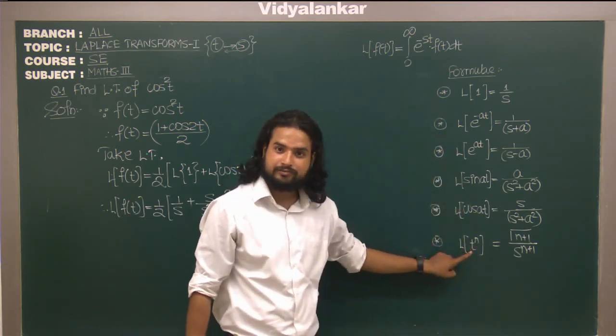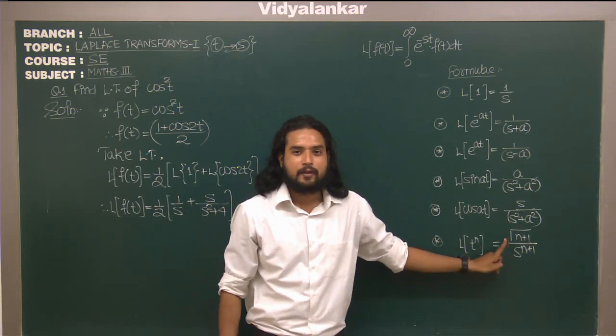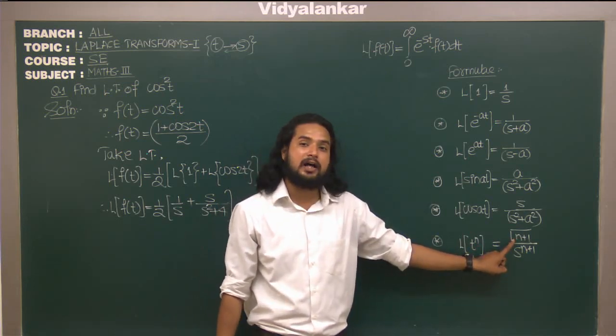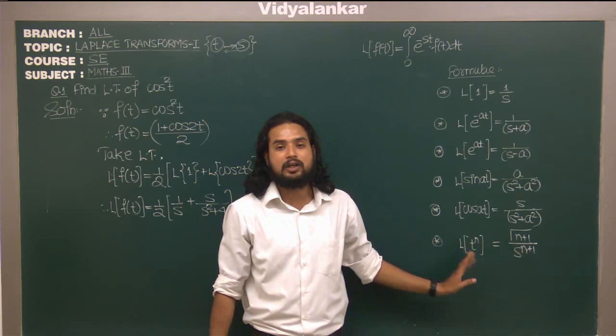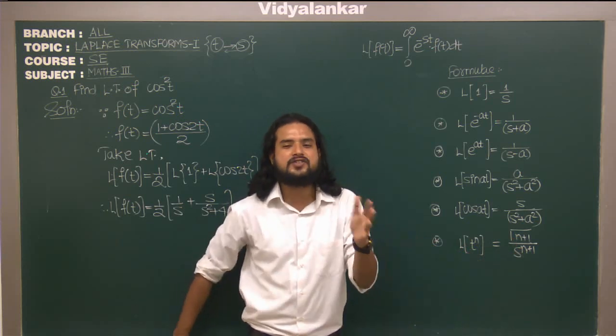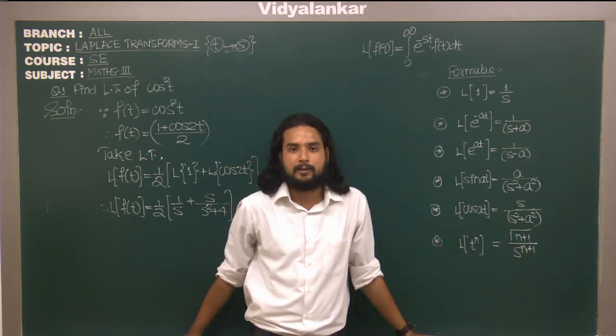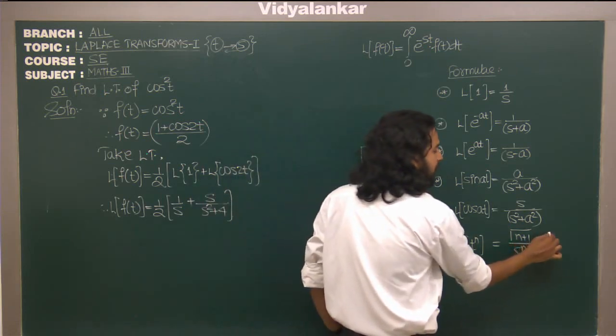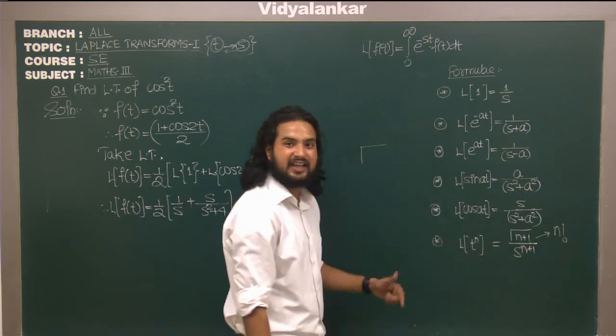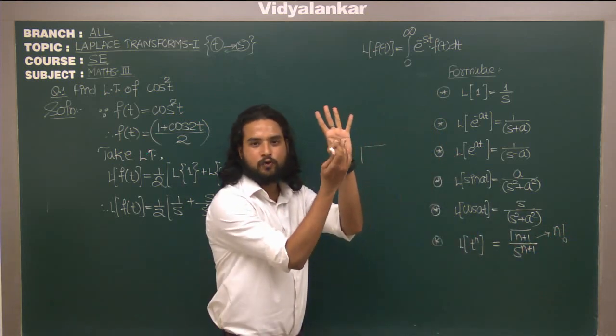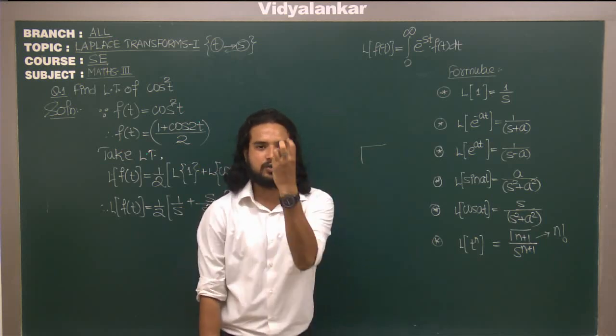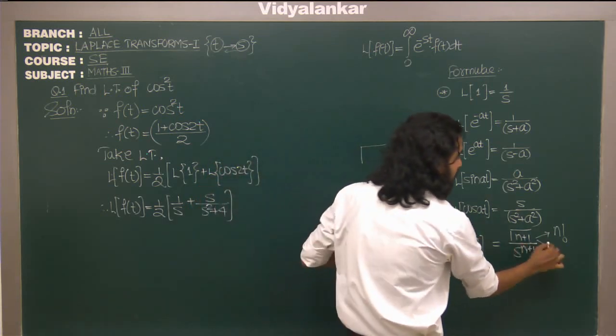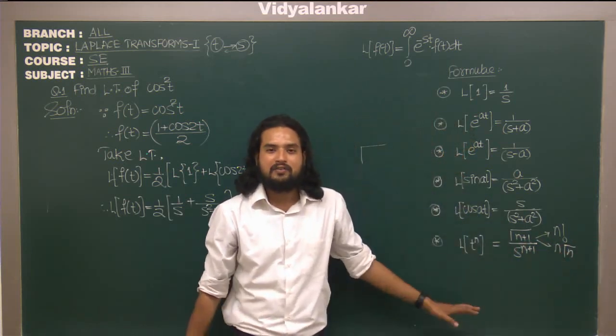Now in the list of formula, if I tell you this - looking at this you will feel what is this, is this square root? No. T raised to n Laplace is given by gamma n plus 1 upon s raised to n plus 1. That's formula for t raised to n which involves gamma. Only few branches from diploma are aware of this terminology gamma. It is not square root, it is gamma. Gamma n plus 1 is actually n factorial if n is an integer value. If it is gamma 5, it's 4 factorial - you reduce it by 1.